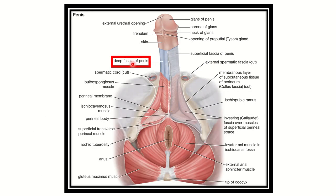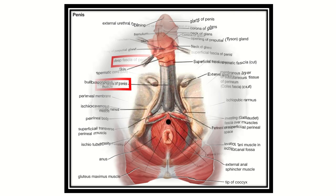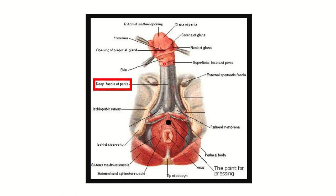In this picture we can also see the deep fascia of the penis covering most of the whole length. This is the spongy part of the urethra, and here the whitish structure is the deep fascia covering the whole length of the spongy or penile part of the urethra.